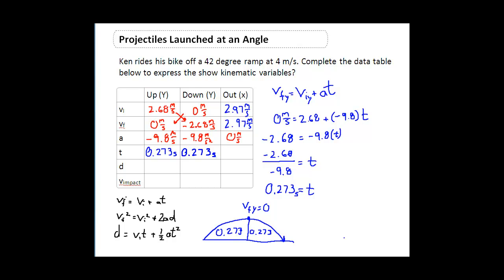Therefore, the total amount of time that it takes me to go my horizontal distance is going to be 2 times 0.273, for an amount of time of 0.546 seconds.